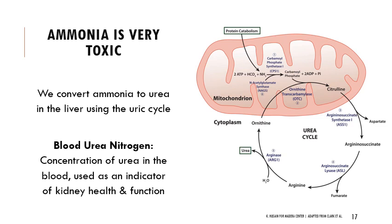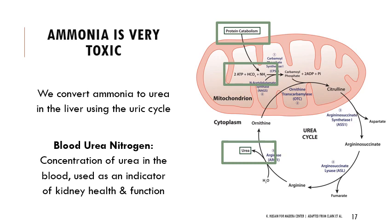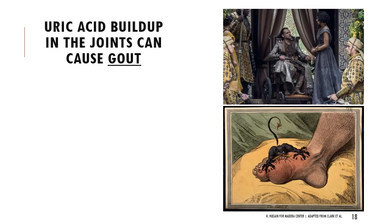Ammonia is extremely toxic and we want to convert it very quickly to urea — that's done in the liver using the urea cycle. When protein catabolism produces ammonia, it's converted in the mitochondria and other structures of the liver into urea through a series of steps — you do not need to memorize this. You can measure the amount of urea in your blood with a measurement called blood urea nitrogen, which is used as an indicator of how well your kidneys are functioning and your general health.